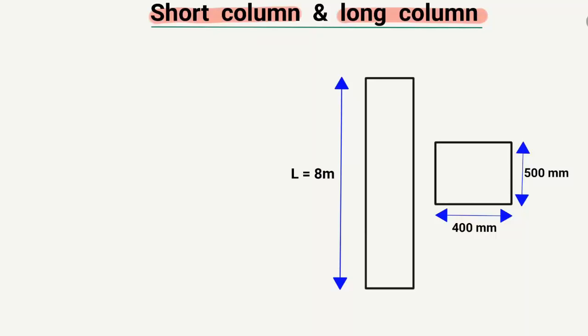I will explain this difference with the help of an example so it will be easier to understand. Let's consider that the length of the column is 8 meters, and the cross-section of the column has a width or breadth equal to 400 millimeters and a depth equal to 500 millimeters.